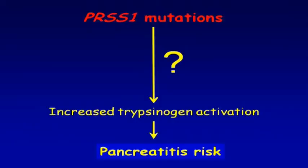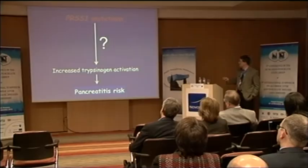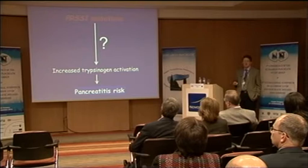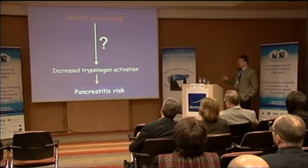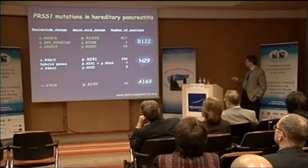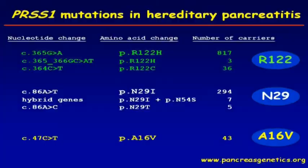The question was: if you have a PRSS1 mutation — a very strong risk factor — and we suspect that you end up with increased trypsinogen activation and increased risk for pancreatitis, what is the mechanism in between? That was a black box. You might think it could be mutation-dependent stimulation of activation, but if you do the experiment you actually get very disappointed.